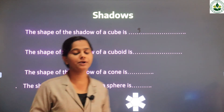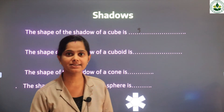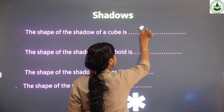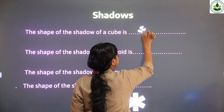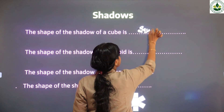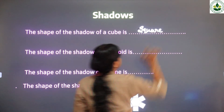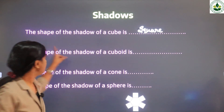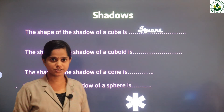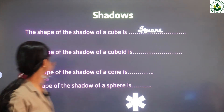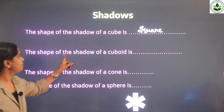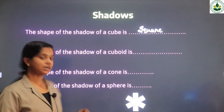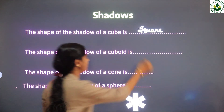Let us revise. The shape of the shadow of a cube is a square. The shape of the shadow of a cuboid is a rectangle.